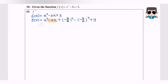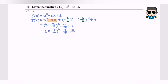So finally, we get x minus 3 over 2, bracket squared, minus 9 over 4 plus 3. Simplifying: x minus 3 over 2, bracket squared, minus 9 over 4 plus 12 over 4. So finally, we have f(x) in standard form: x minus 3 over 2, bracket squared, plus 3 over 4.